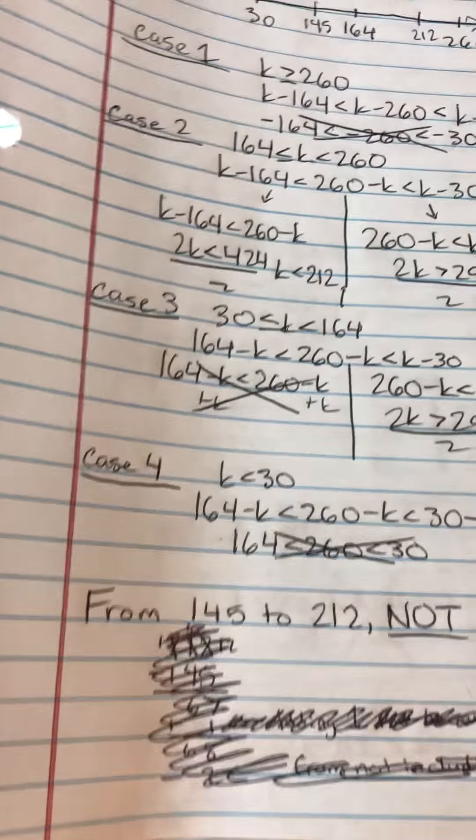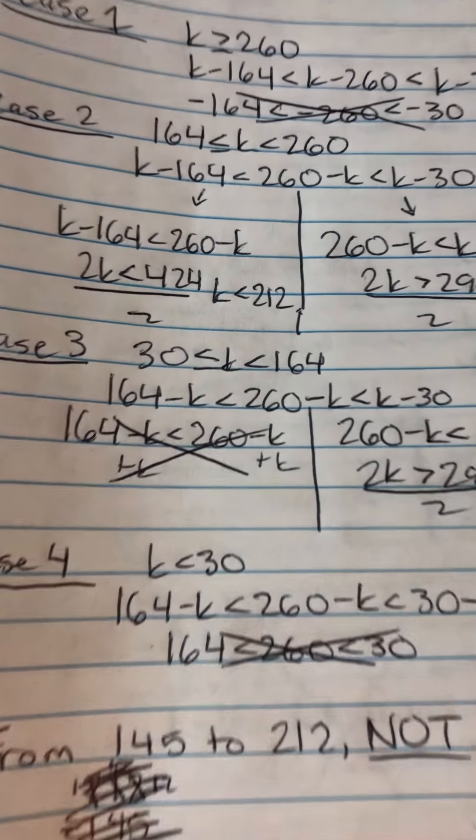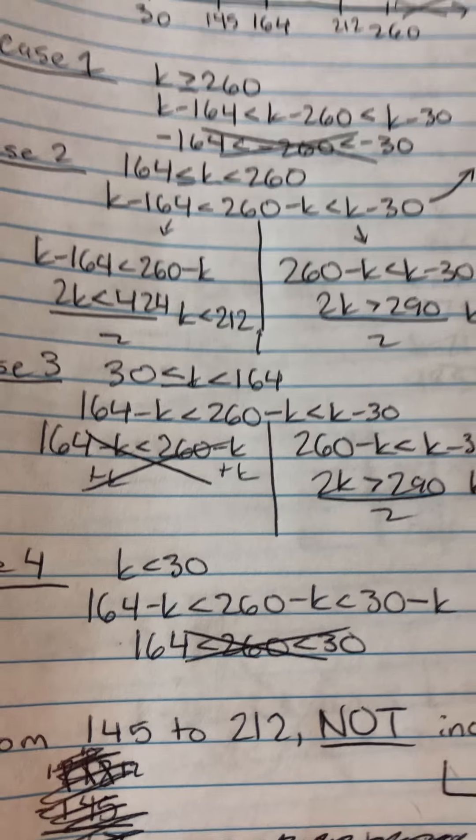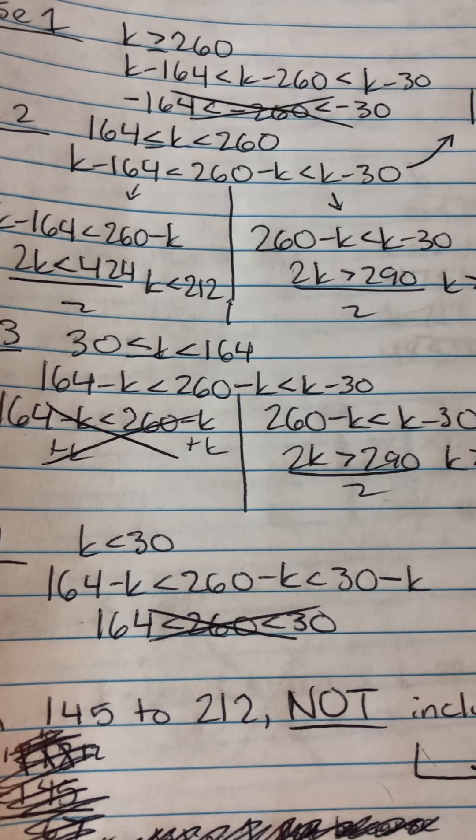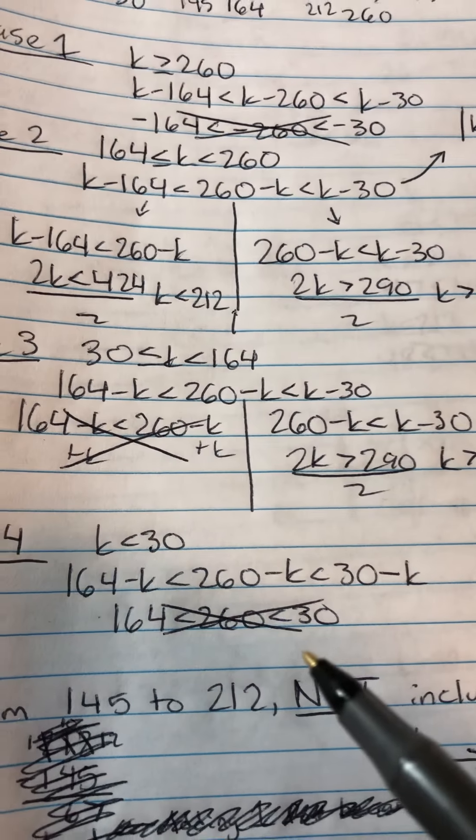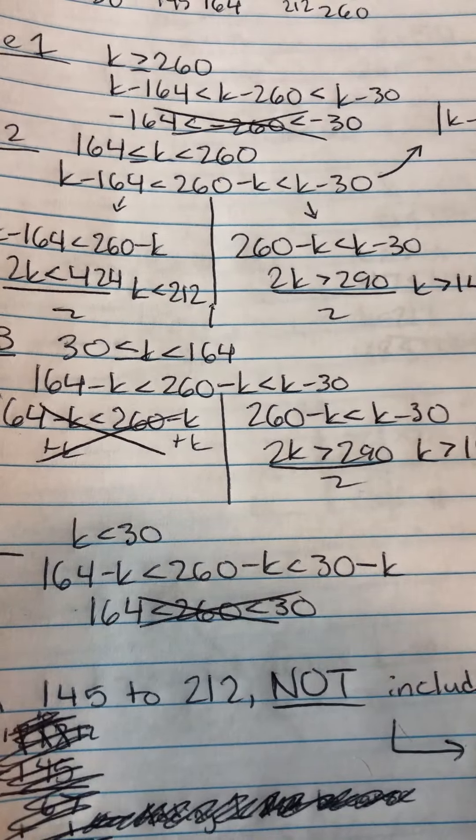And so now I just have to check case 4, which is k is less than 30. And so you get 164 minus k is less than 260 minus k, which is less than 30 minus k. And that just means 164 is less than 260, which is less than 30. That obviously doesn't make sense. So case 4 doesn't work.